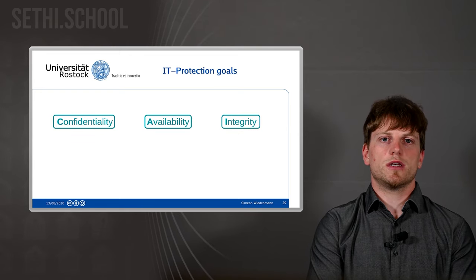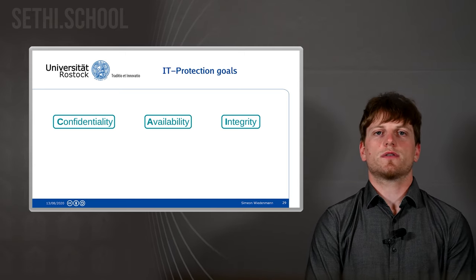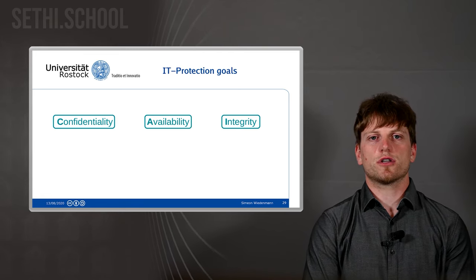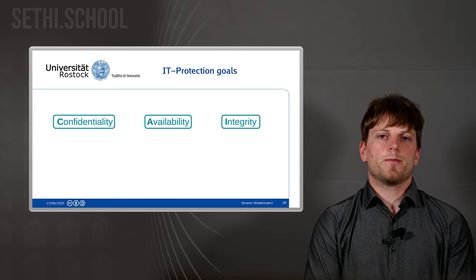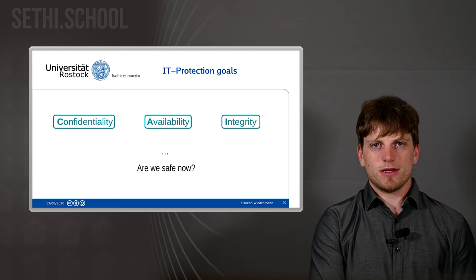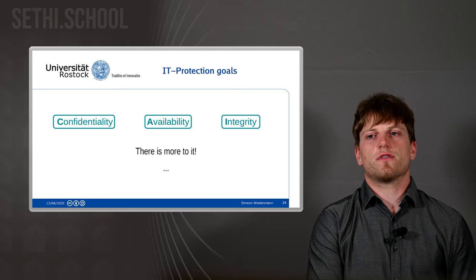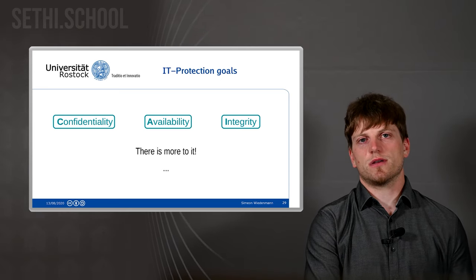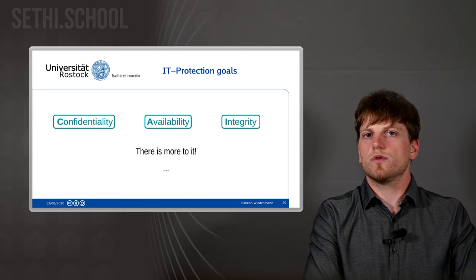The classical IT protection goals — confidentiality, availability, and integrity, sometimes called the CIA triad — we have now seen what they mean, and this was part of our definition of IT security. The question is: are we safe now? And this question is an easy one because we never are. We might even never be done with the task of achieving security. But increasing security is a good idea if it helps to have a more reliable, more sustainable, more usable system.